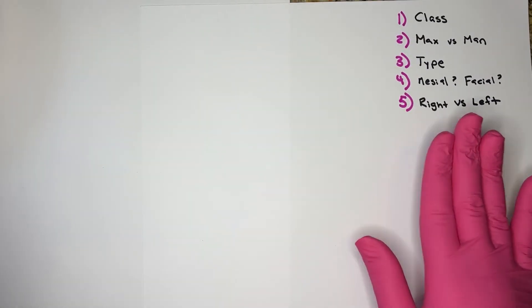Step number five, left versus right. Use an imaginary mouth facing you. So you have that facial, taller cusp, facing you.